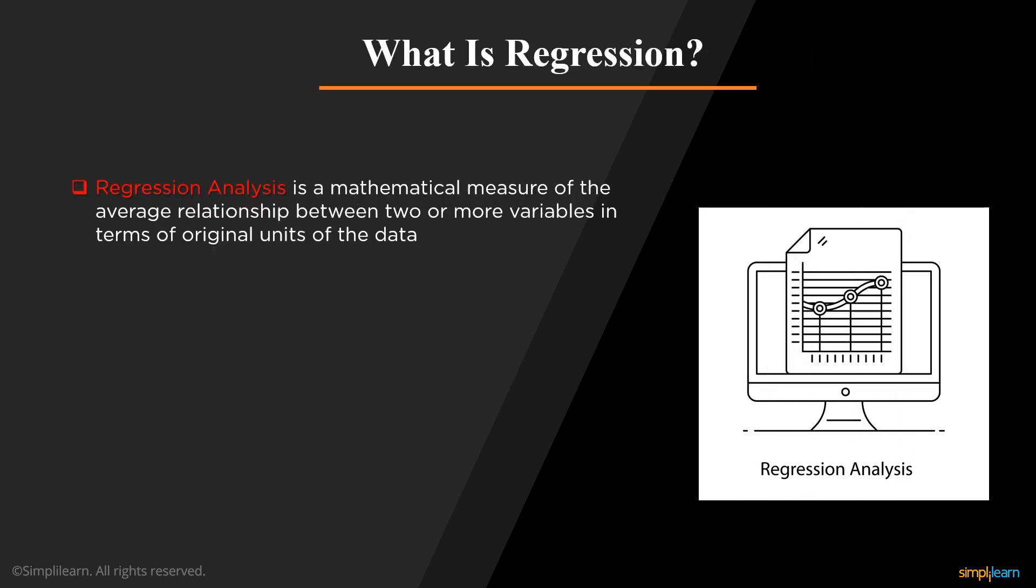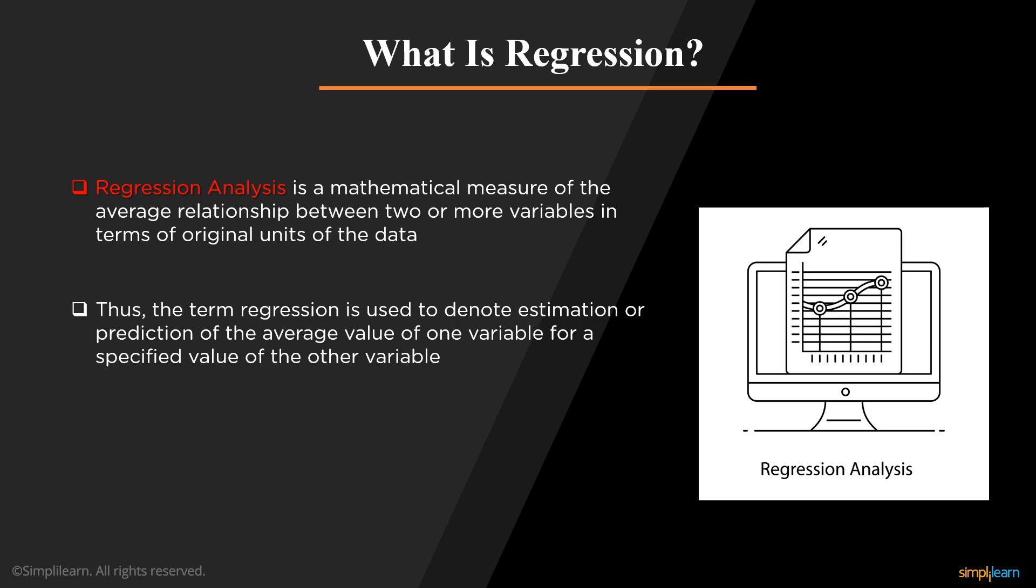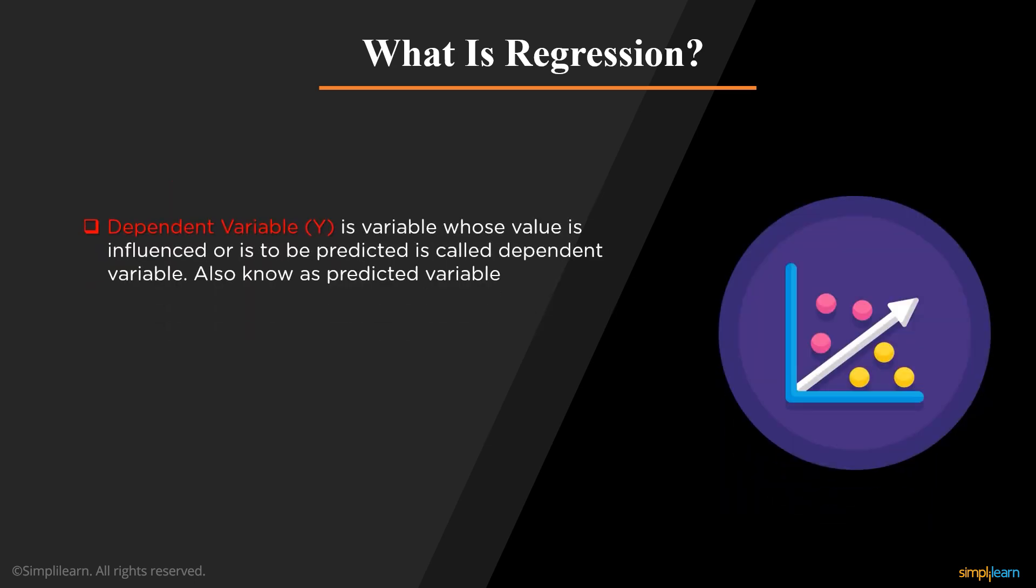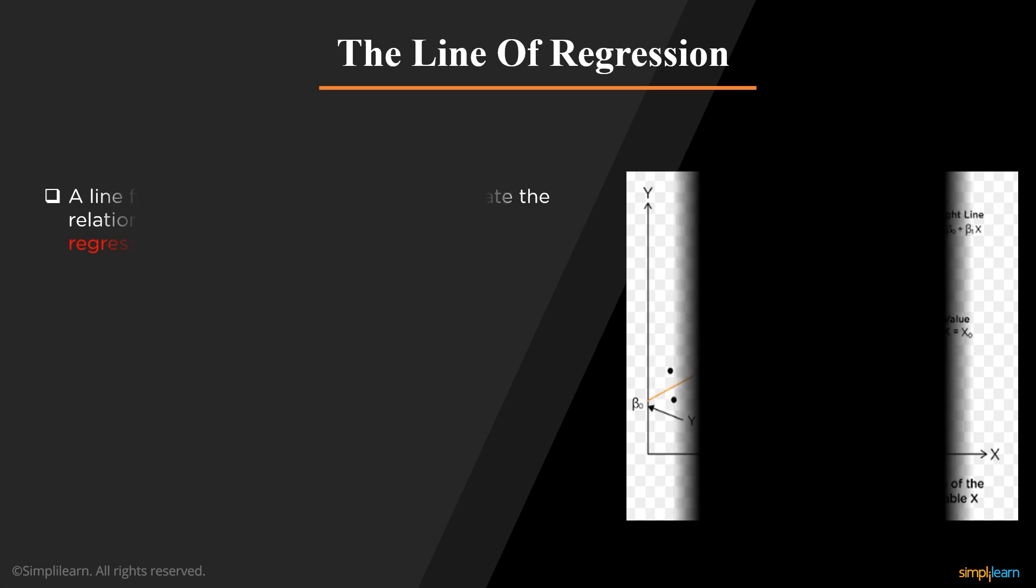Now, what is regression? Regression analysis, like most multivariate statistics, allows you to infer that there is a relationship between two or more variables. These relationships are seldom exact because there is a variation caused by many variables, not just the variables being studied. In regression analysis, there are two types of variables. One is dependent variable and other is the independent variable. A dependent variable is a variable whose value is influenced or to be predicted. The dependent variable is often denoted by y and is also known as a predicted variable. Whereas, independent variable which is denoted by x is a variable which influences the value or is used for prediction.